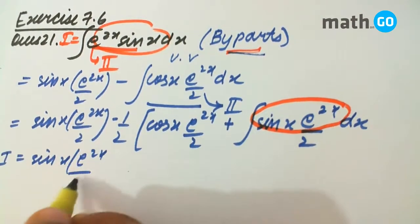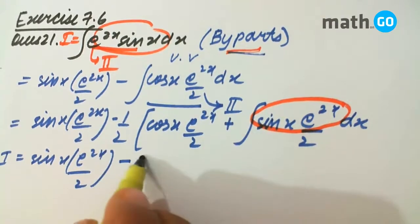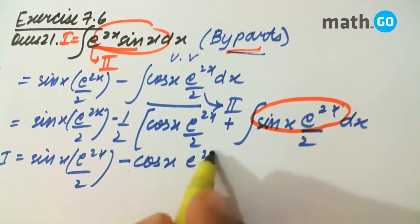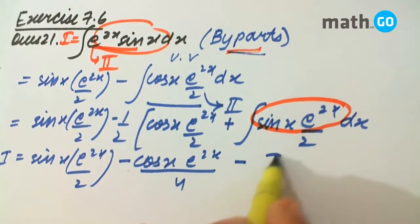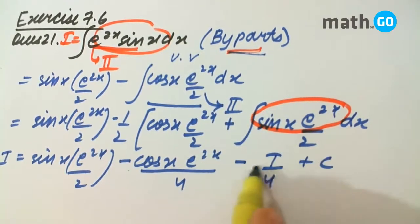sin x e to the power 2x by 2, minus cos x into e to the power 2x by 4, minus I by 4 plus C.